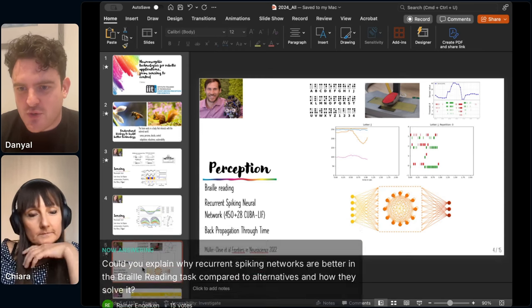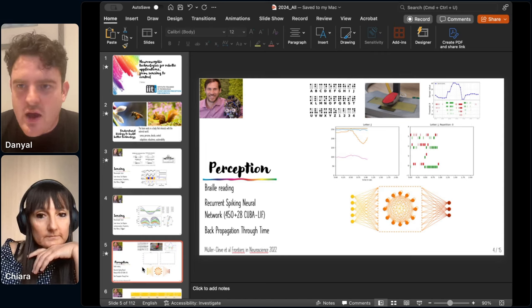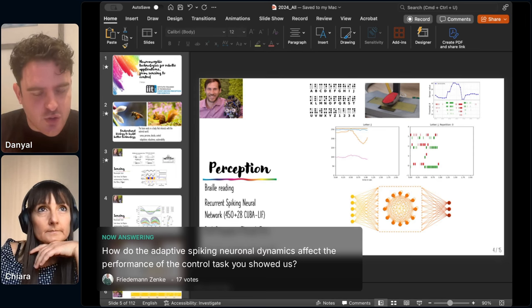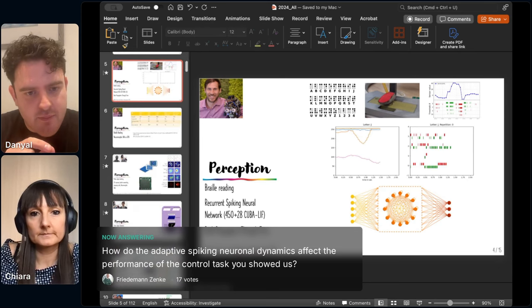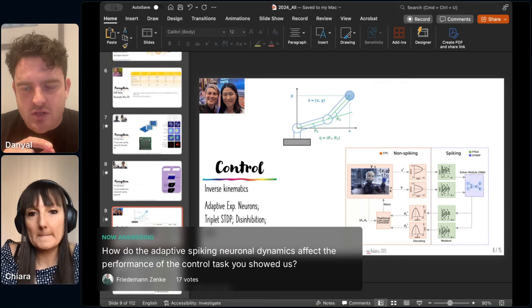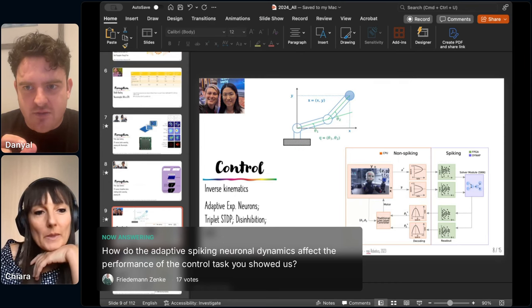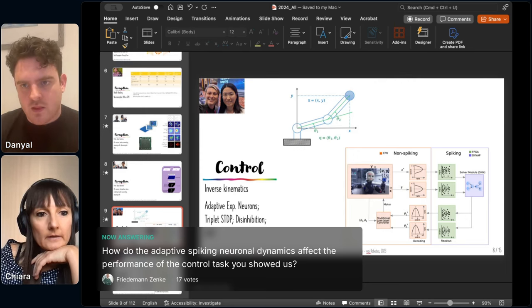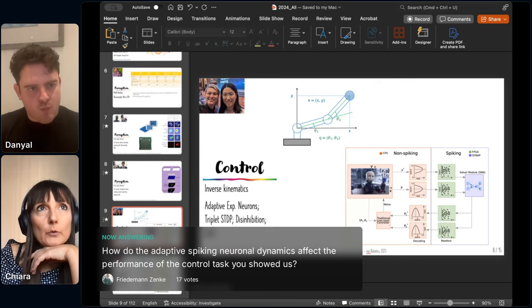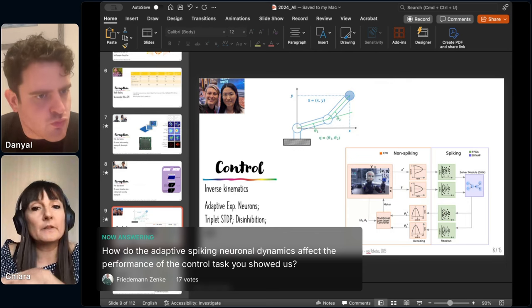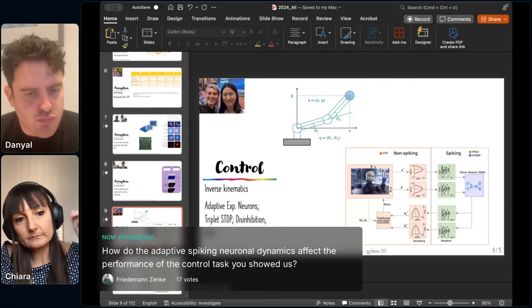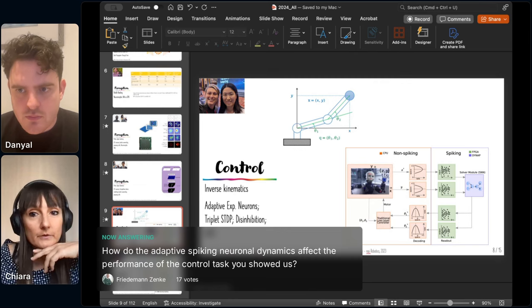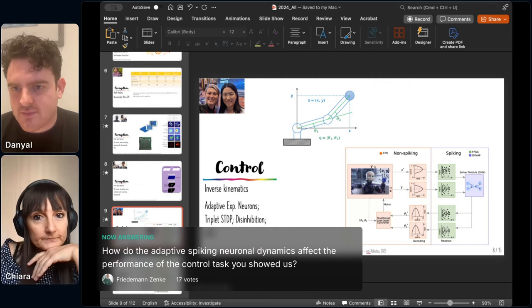We probably have time for at least two more. Friedman's question was on how do adaptive spiking neuronal dynamics affect the performance of the control task? You mentioned the computational primitives that you used for your control task were these ADEX neurons and the triplet STDP. Did you vary that? I don't think we had a look into how to optimize the adaptation of the neurons. The adaptive exponential neurons are the neuron model implemented on Loihi, but we didn't look into that in these experiments. You can tune the adaptation but you can also have no adaptation at all. TBD on that.